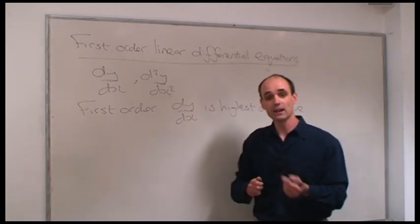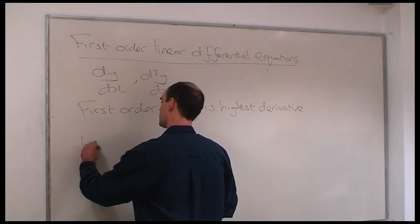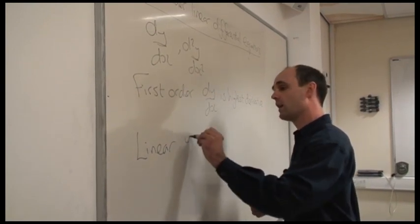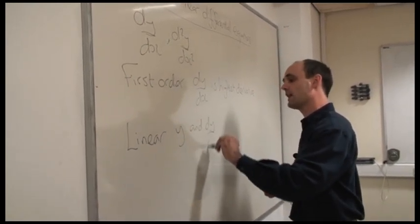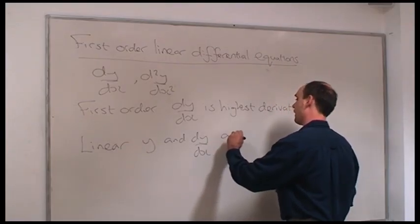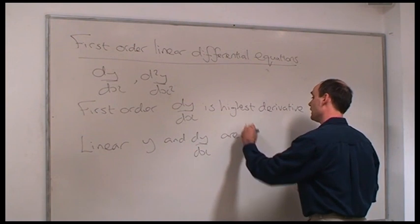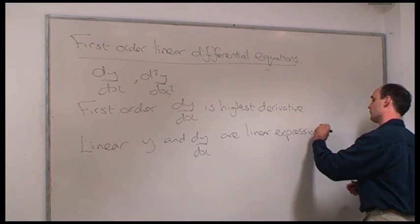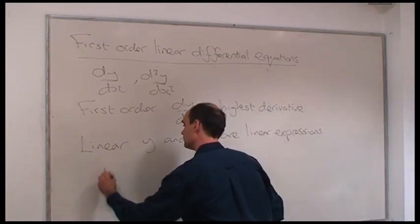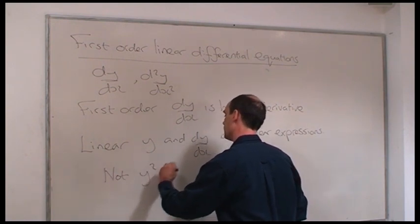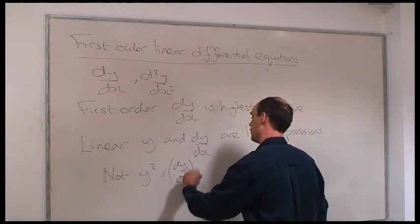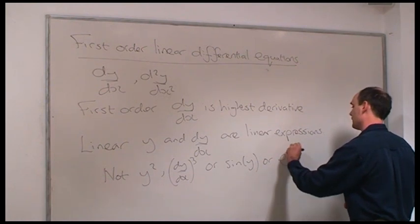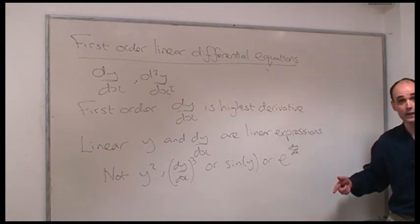What do we mean by linear? By linear, we mean that terms like y and dy by dx are occurring as linear expressions — not anything like y squared, (dy/dx) cubed, sine of y, or e to the power of dy by dx, or anything else that would be nonlinear.